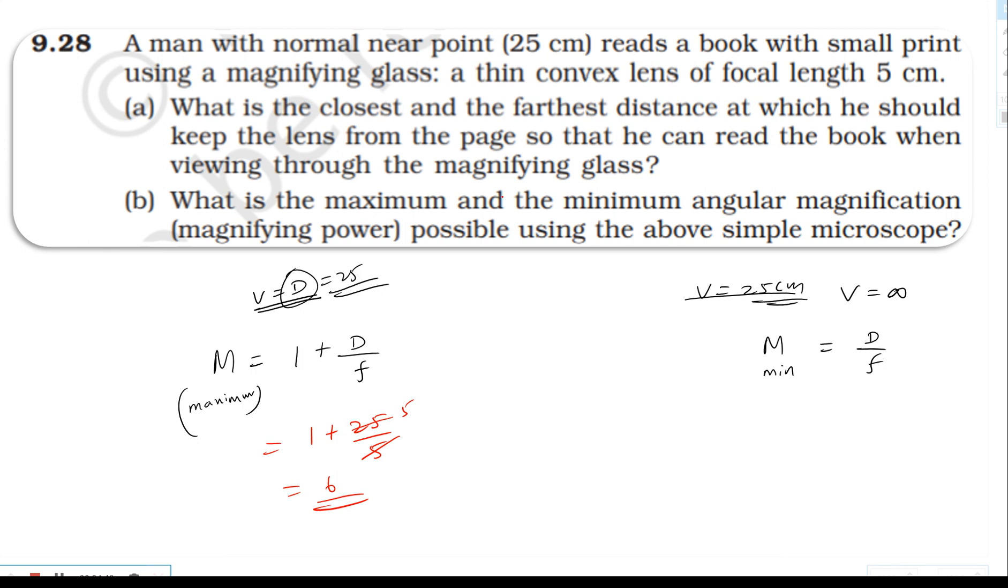Minimum magnifying power is D by f, which is 25 by 5, which equals five. So maximum magnifying power is six and minimum magnifying power is five.